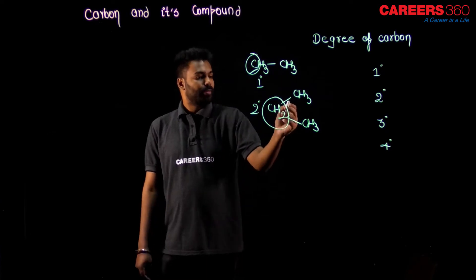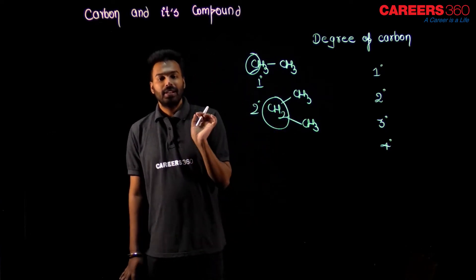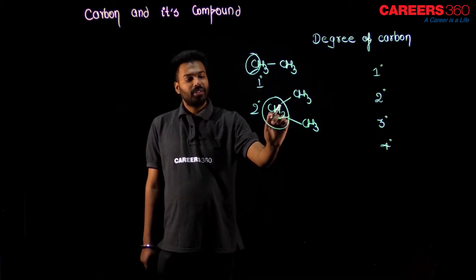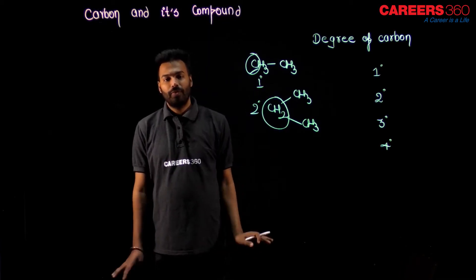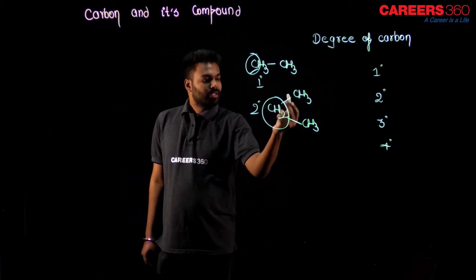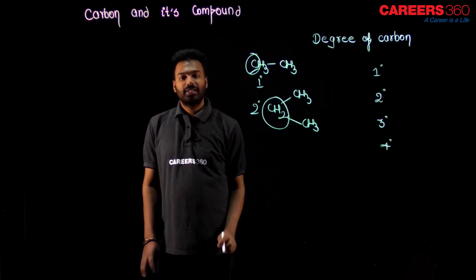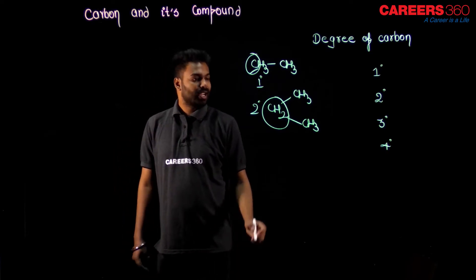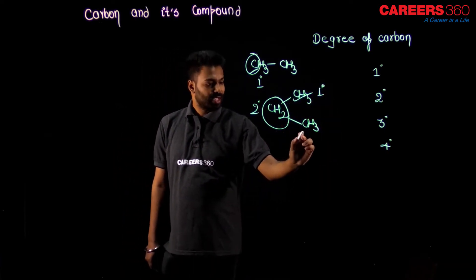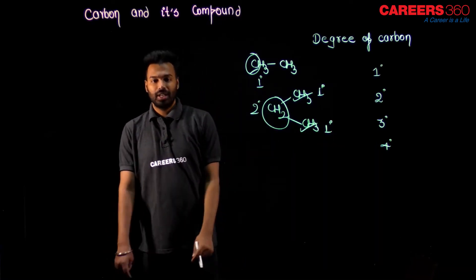In the same structure, what about the degree of this end carbon? It is very simple. If you want to know the degree of any particular carbon, just see how many carbons are directly touching it. Only one carbon is touching this end carbon, so this carbon is connected to one carbon directly — that is why it is one degree. The end carbons are one degree, but the middle carbon is two degree.